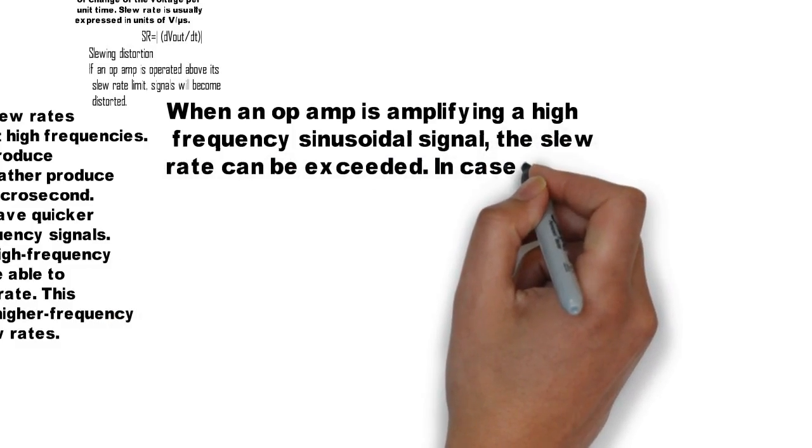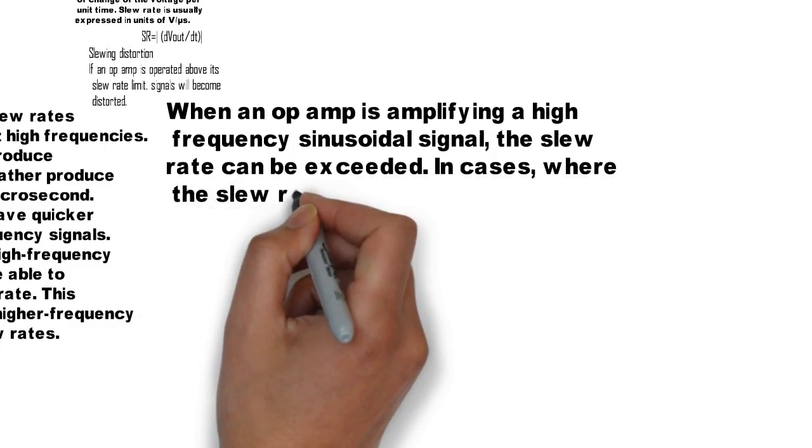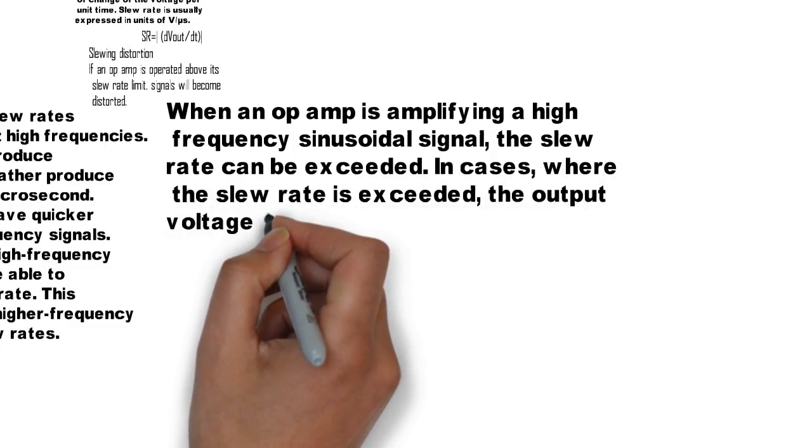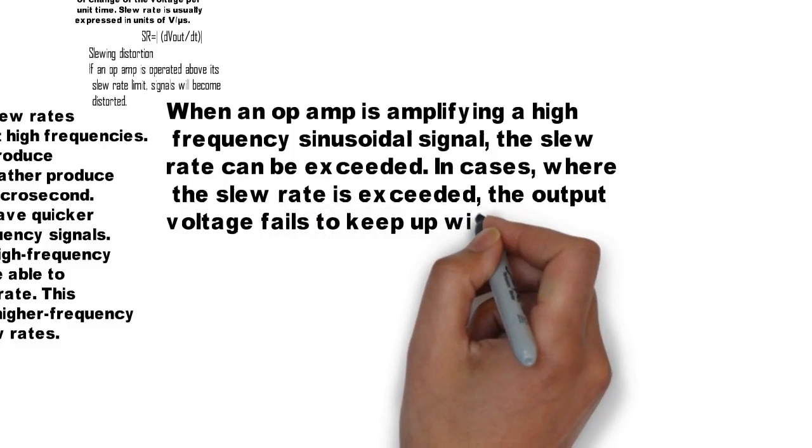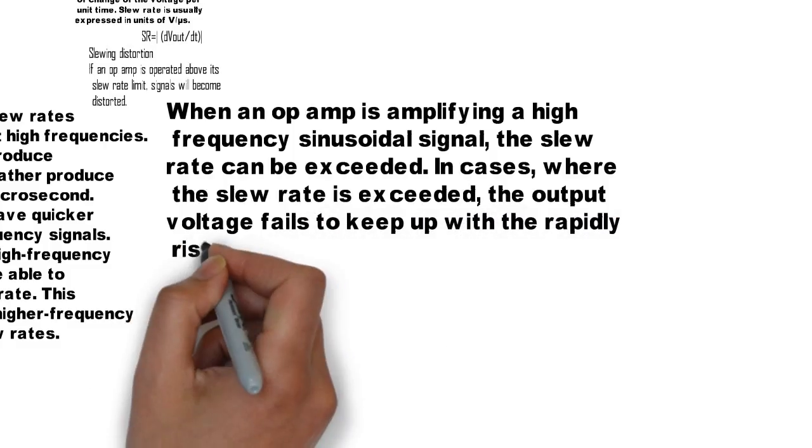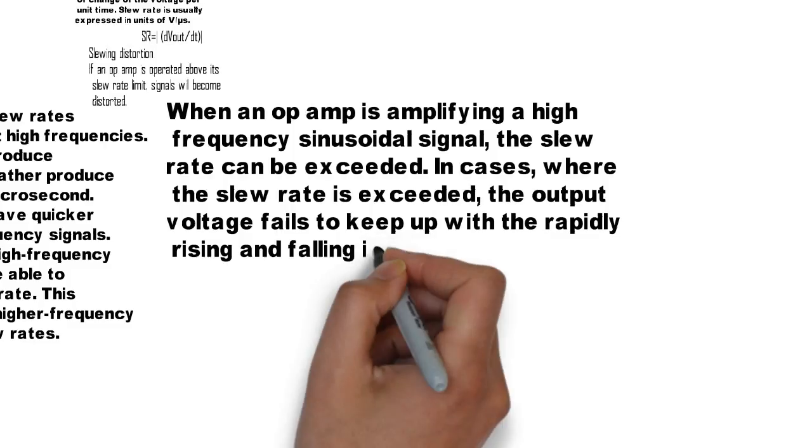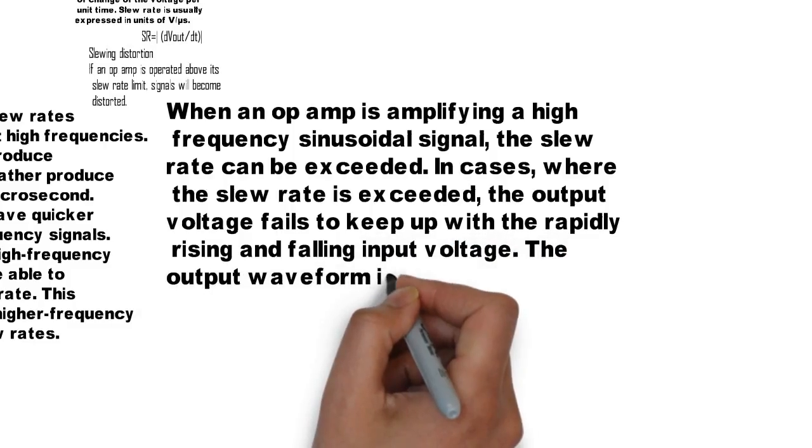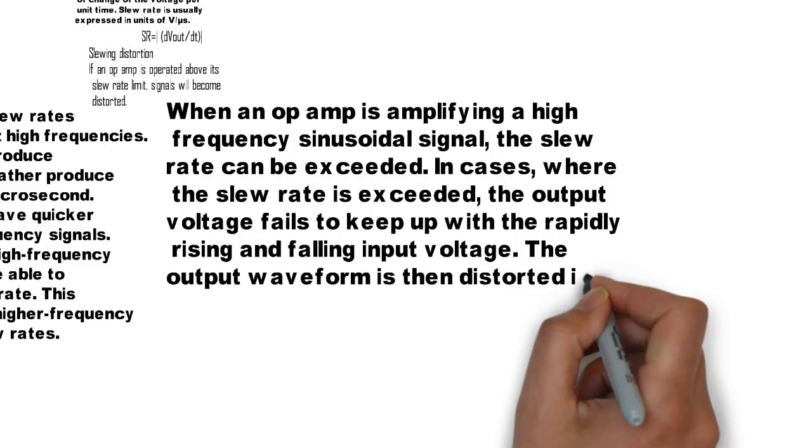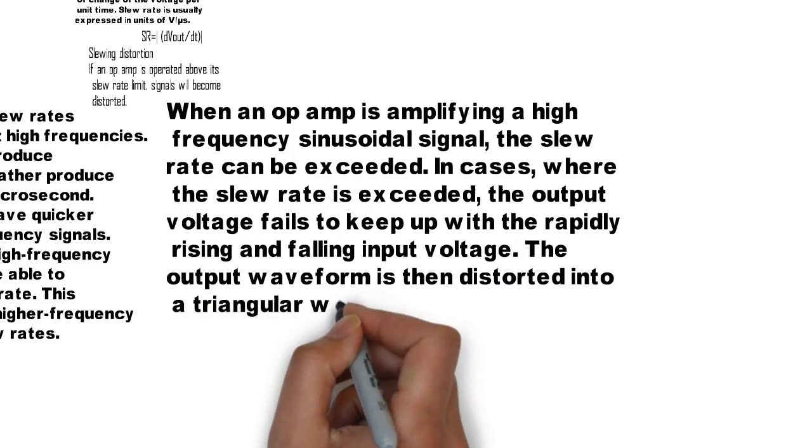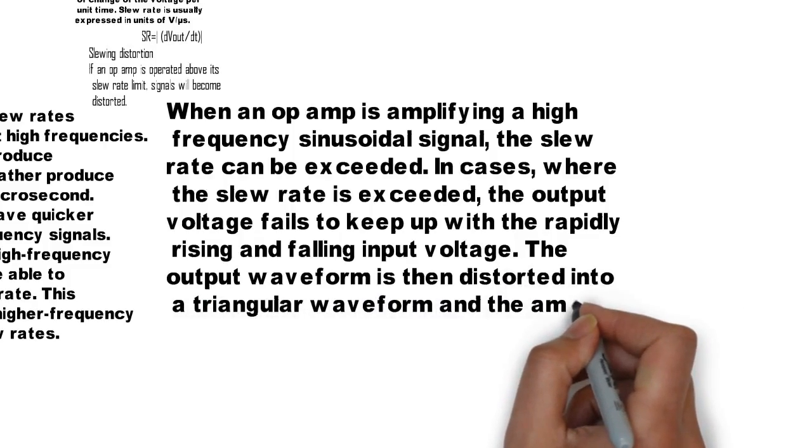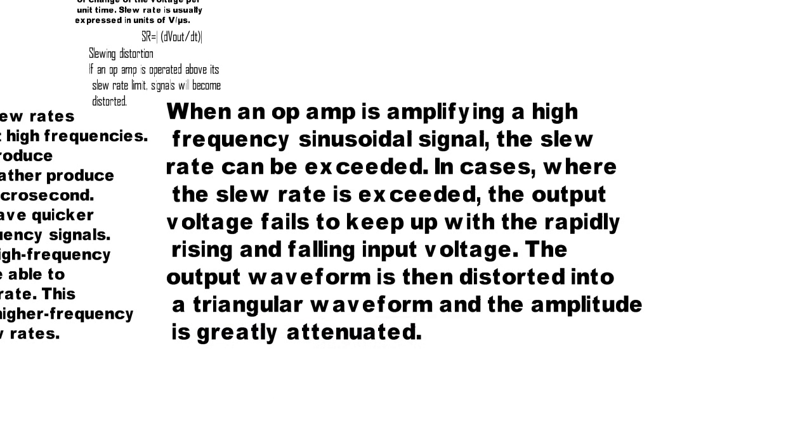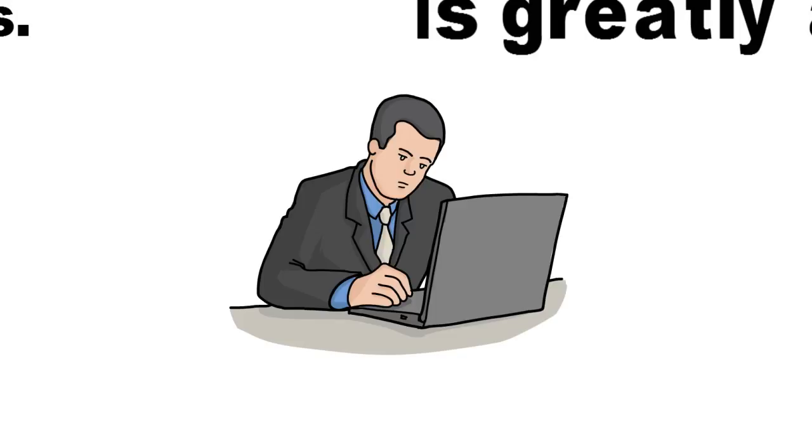In cases where the slew rate is exceeded, the output voltage fails to keep up with the rapidly rising and falling input voltage. The output waveform is then distorted into a triangular waveform, and the amplitude is greatly attenuated.